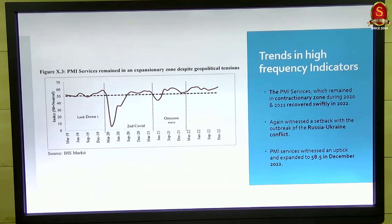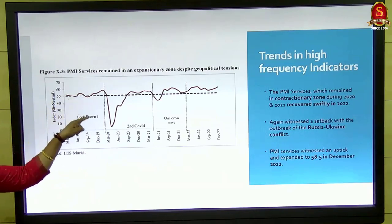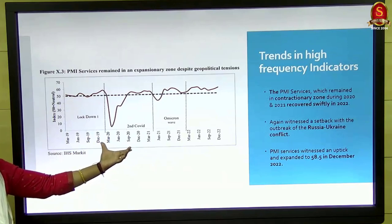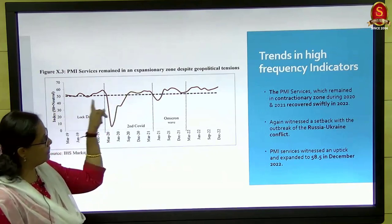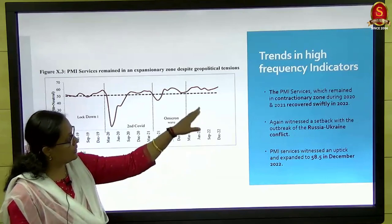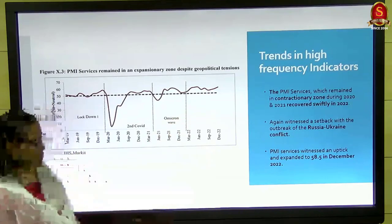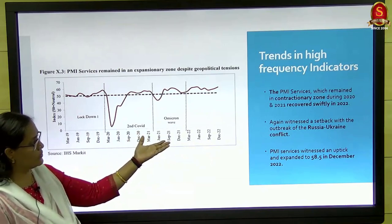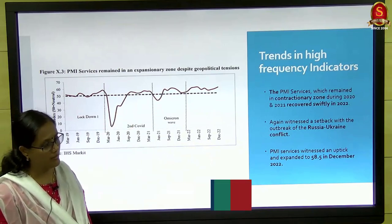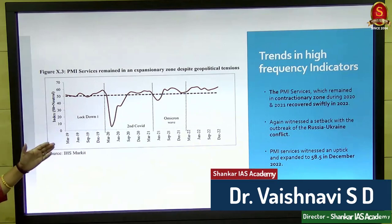This is the PMI Services graph. You can see one black dotted line marking 50. During the COVID period, the graph falls below that — services were shrinking. Slowly we are rising above that 50 mark, and towards December 2022 it has started increasing. We are seeing a lot of demand being created for services. After COVID there was also a slump due to the war situation, but from September to December we can see an increasing trend.